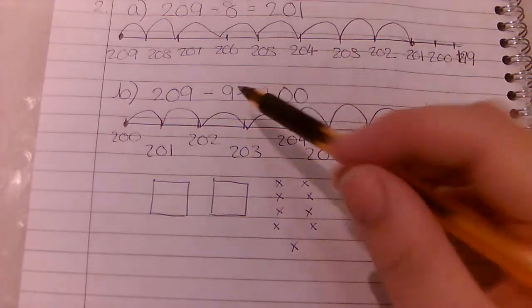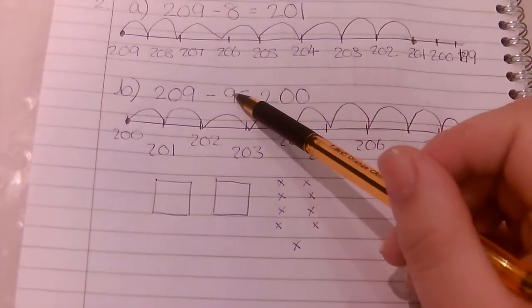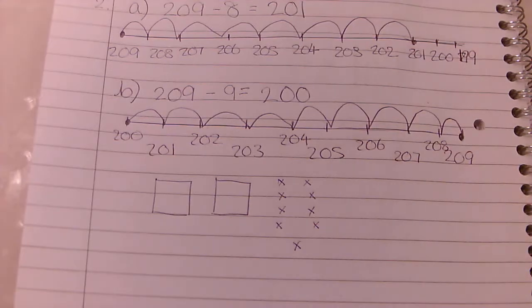And we're going to be taking away 9. Remember if we're using base 10, we don't need to make this number because we're not adding them, it's just taking away. So we're going to have less base 10.